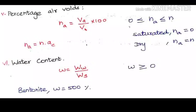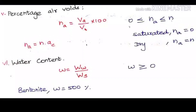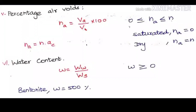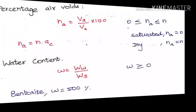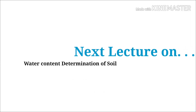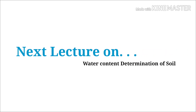The sixth property is water content, also an important property. Water content equals weight of water divided by weight of solids. This formula is based on weight, whereas all the remaining formulas are based on volume. Water content can be greater than or equal to 0. A soil type called bentonite, which is a volcanic ash, has a very high water content — nearly equal to 500%. Thank you, and keep watching for the next lecture on water content determination.